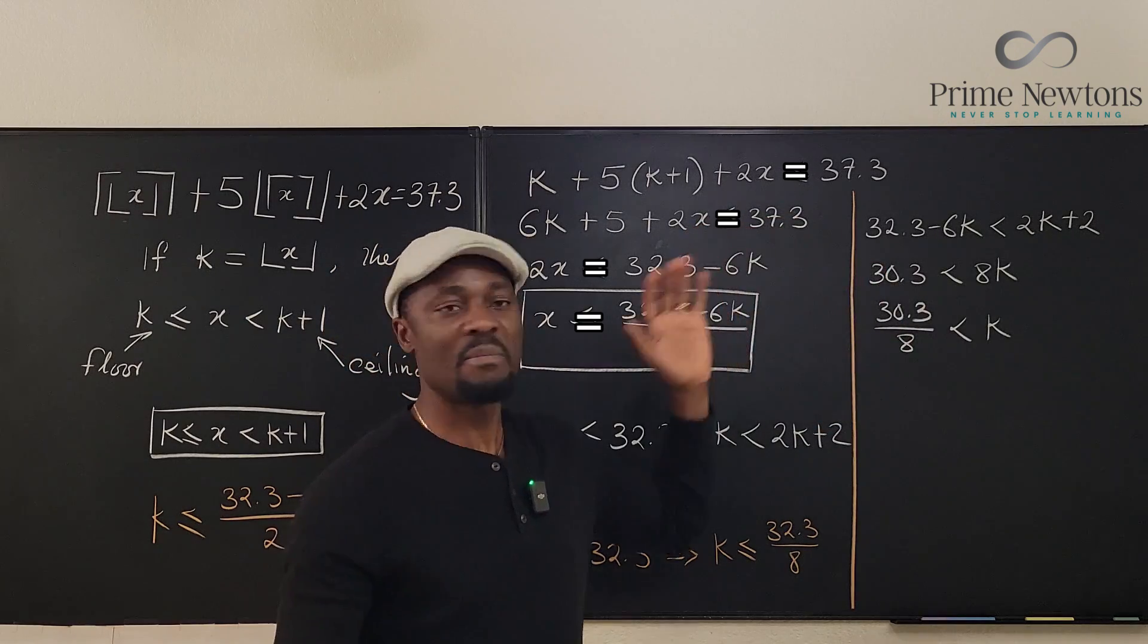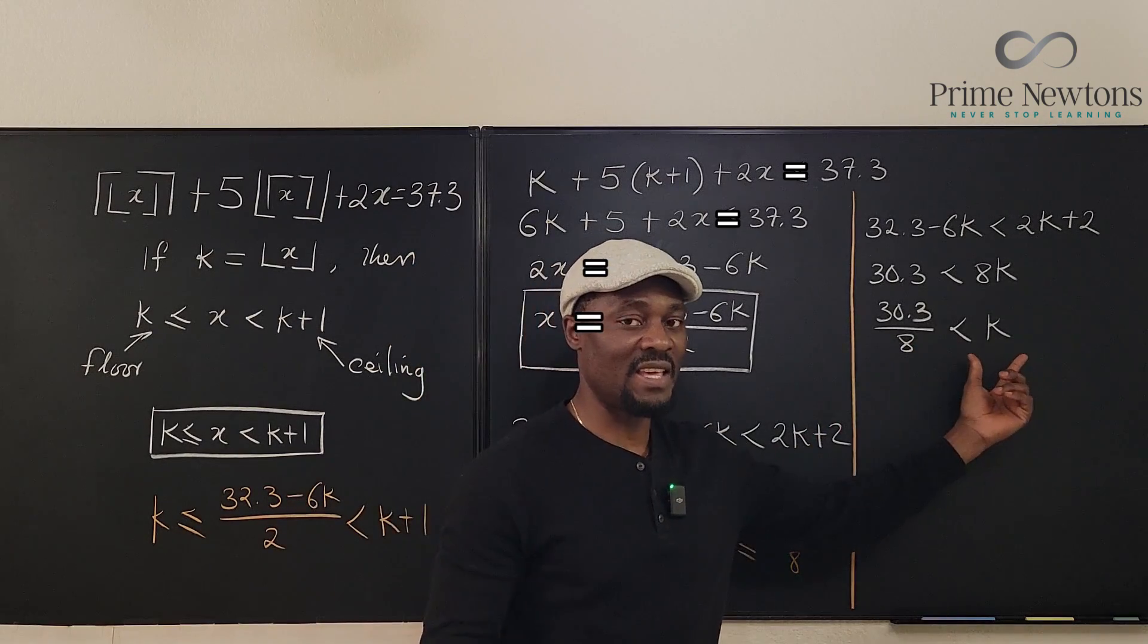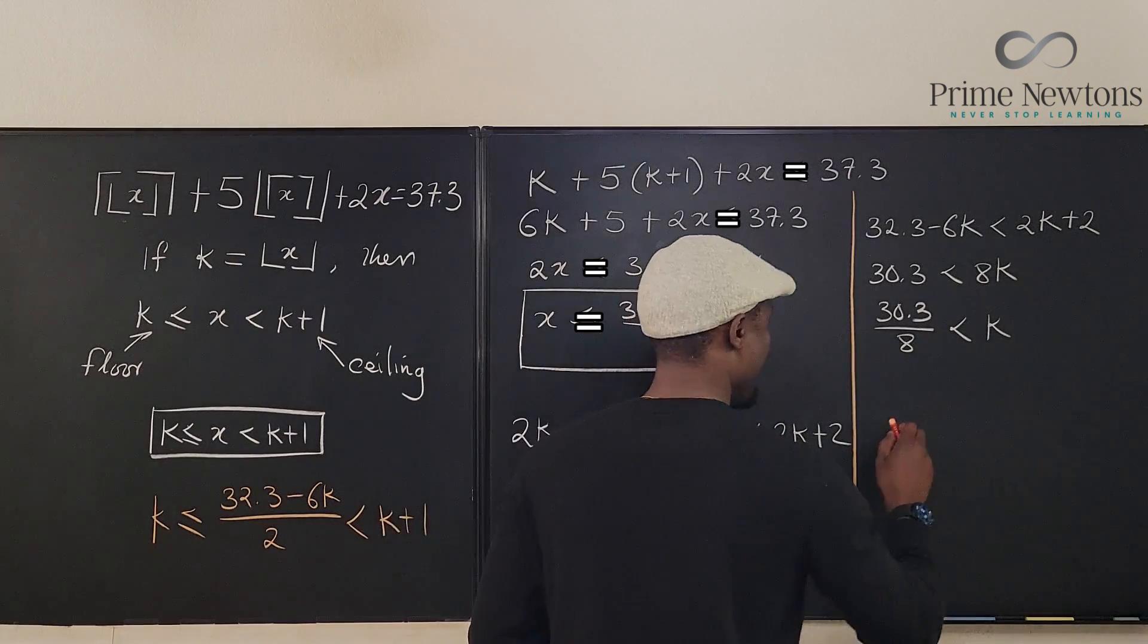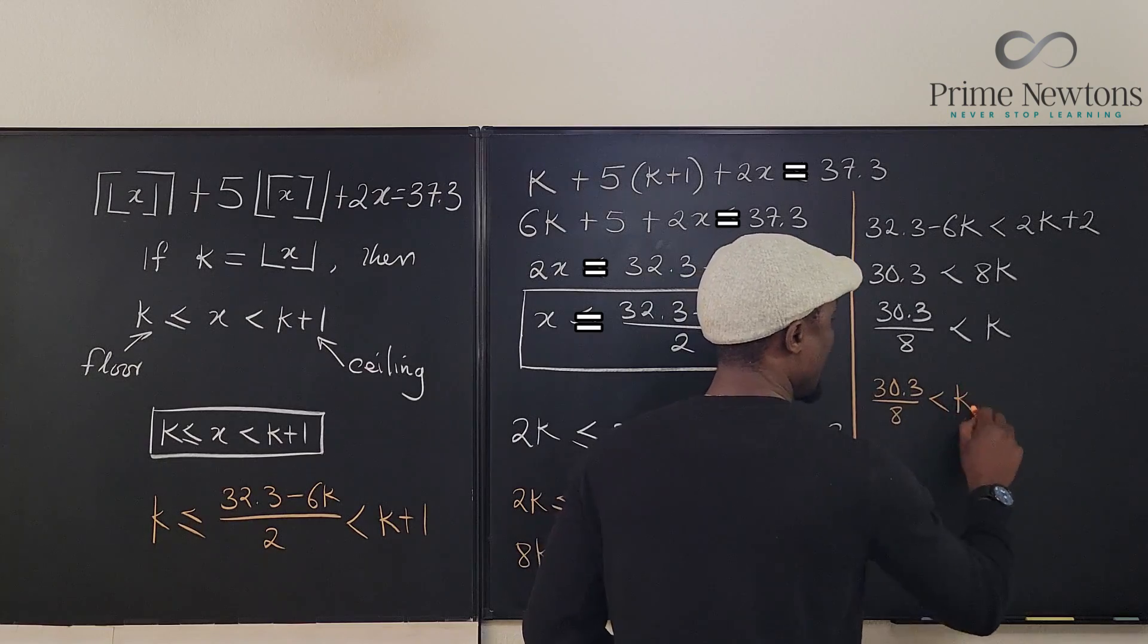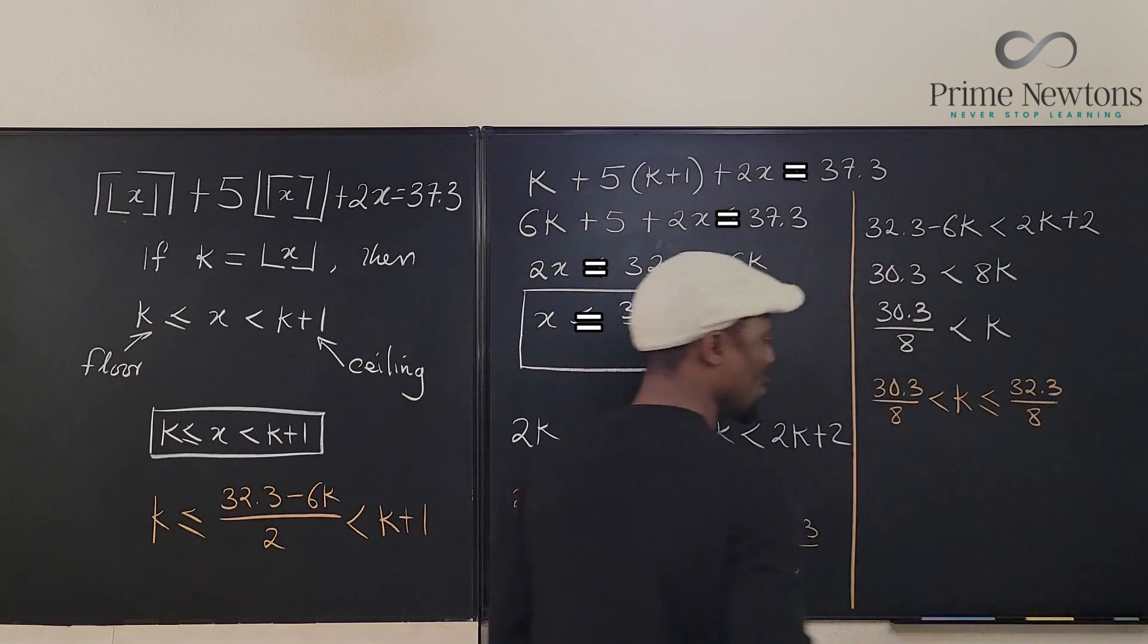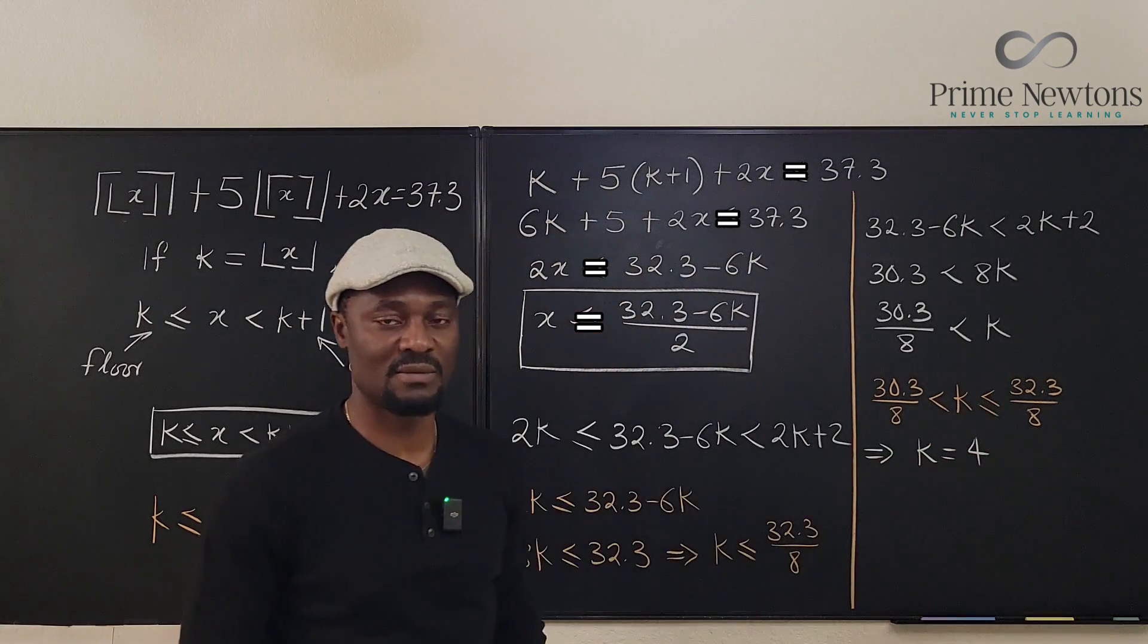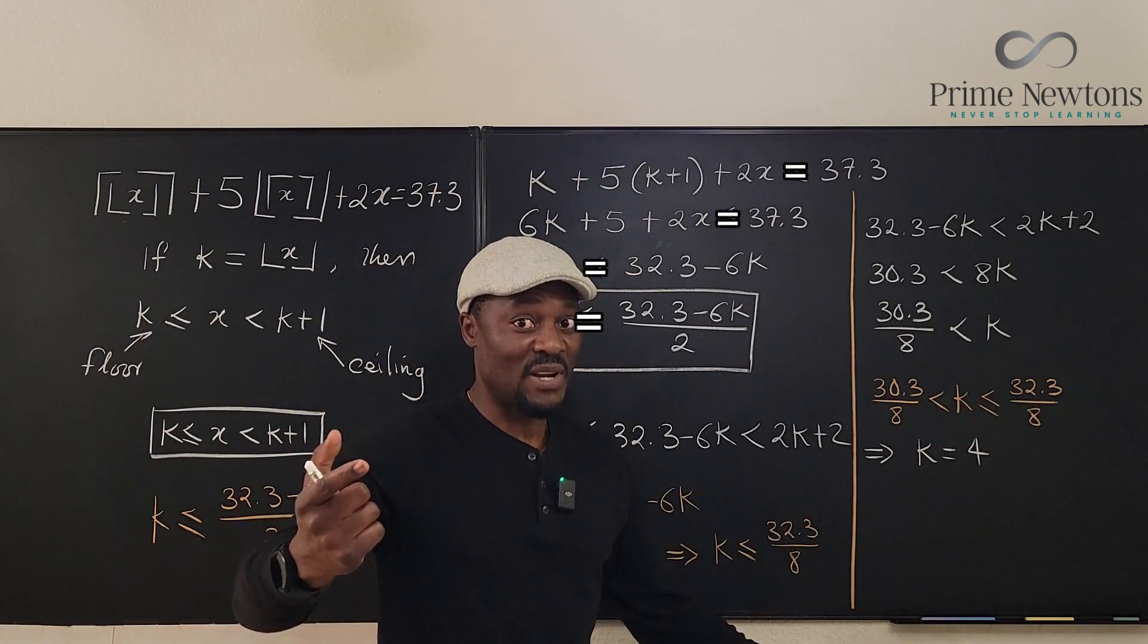You see, 30.3 over 8 is 3.9 something or something, it's just before 4. I know it's less than 4. My math is not that great, but I know this is not up to 4. So we have a number not up to 4 is less than k, and k is less than a number greater than 4. And k is supposed to be an integer, k must be 4, right? Let's combine both of them. So we know that 30.3 over 8 is less than k, and k is less than or equal to 32.3 over 8. So clearly this implies that k is equal to 4.